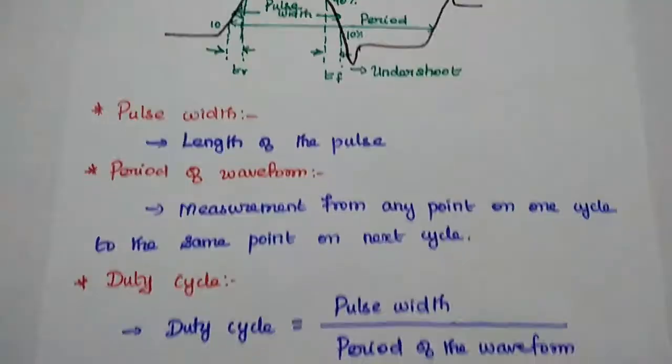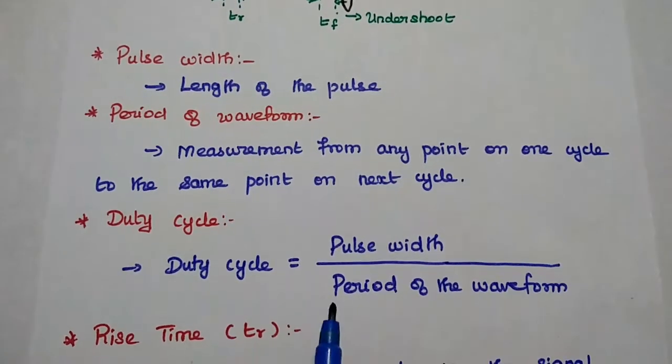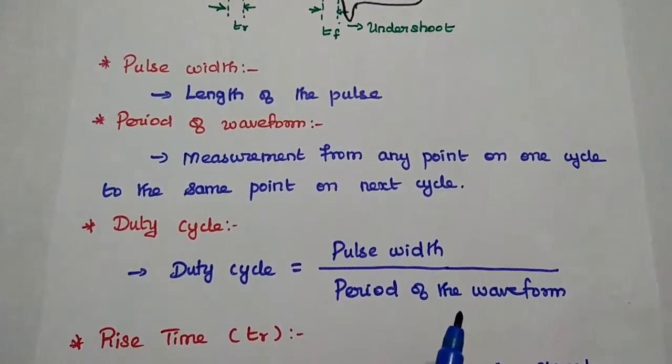Next, duty cycle. It is the ratio of the pulse width to the period of the waveform.